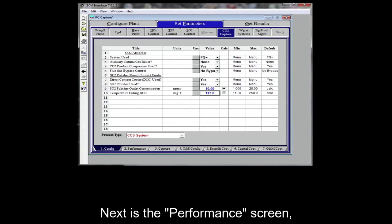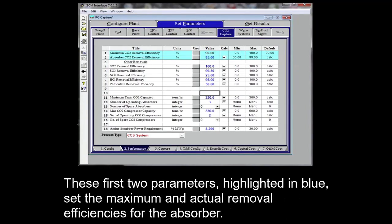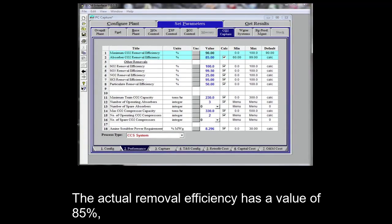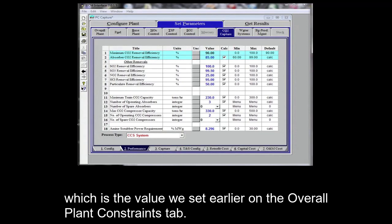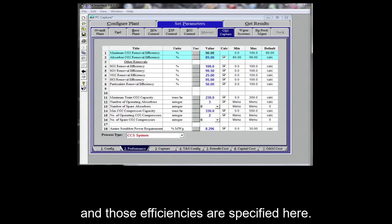Next is the performance screen, where the removal efficiencies of the CO2 capture system is specified. These first two parameters highlighted in blue set the maximum and actual removal efficiencies for the absorber. The maximum value is used when you select the partial bypass option we saw earlier. The actual removal efficiency has a value of 85%, which is the value we set earlier on the overall plant constraints tab. The absorber can also remove any trace acid gases or particles still in the flue gas, and those efficiencies are specified here.